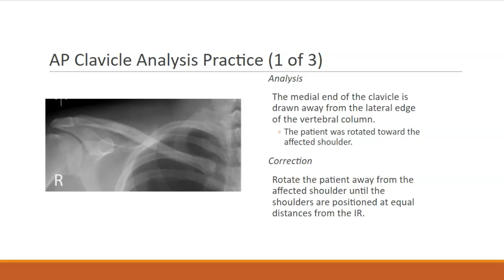Let's take a look at our first practice analysis. We want to make sure that we have all the anatomic structures needed for the projection. We're looking for a clavicle and we have a clavicle. Next, we need to determine if the patient is positioned appropriately. We're first going to look at the medial clavicular end — here you can see that it is drawn away from the lateral border of the vertebral column.